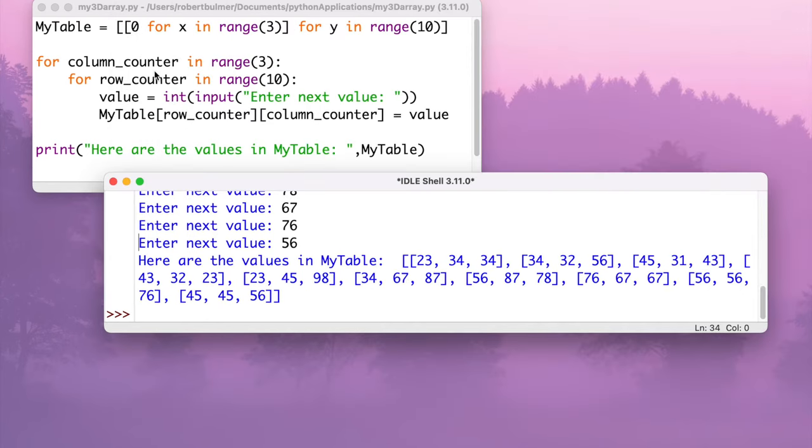So if we compare it with the actual code, we've got the X in range 3, so we've got 1, 2, 3 items, and then we've got 10 rows. So my table, we've got the row count, and we've got the column count, and we've got the value, which is where these integer inputs have come from. So this is an example of a 2D array.